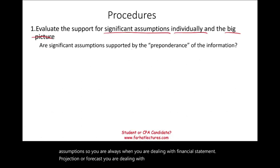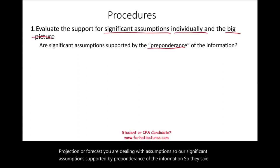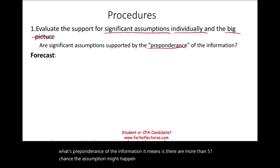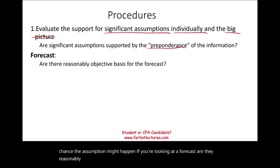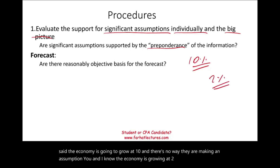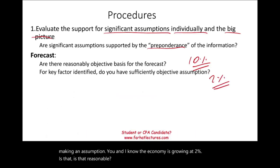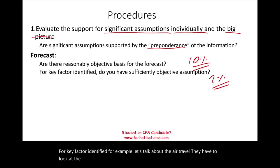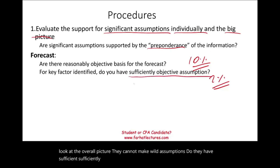When performing procedures, you evaluate support for significant assumptions individually and in the overall picture. Are significant assumptions supported by a preponderance of the information — meaning is there more than a 51% chance the assumption might happen? For a forecast, are there reasonably objective bases? For example, if the economy is forecast to grow at 10% but everyone knows it's growing at 2%, that's not reasonable. For key factors identified, the assumptions must be sufficiently objective.